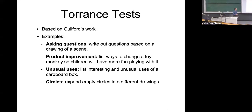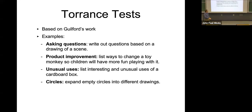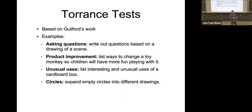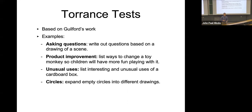Torrance tests are variants based on Guilford's work — asking participants to write questions based on a drawing of a scene, list ways to change a toy monkey so children will have more fun with it, list unusual uses of a cardboard box, or expand empty circles into different drawings. What all of these have in common is either taking one object and asking for many possible versions, or taking several things and finding what's in common — divergent versus convergent thinking.